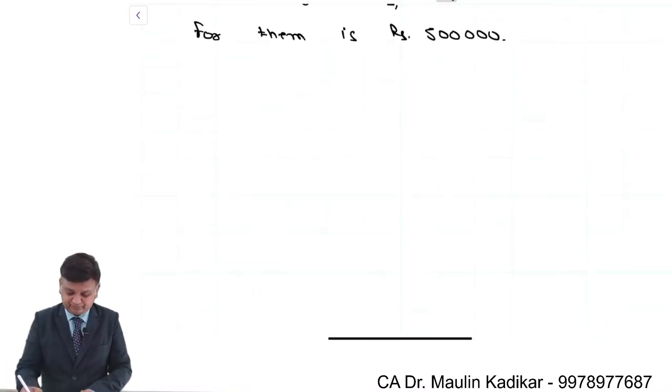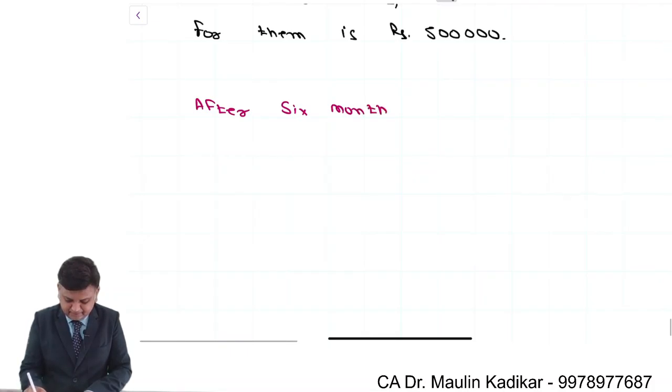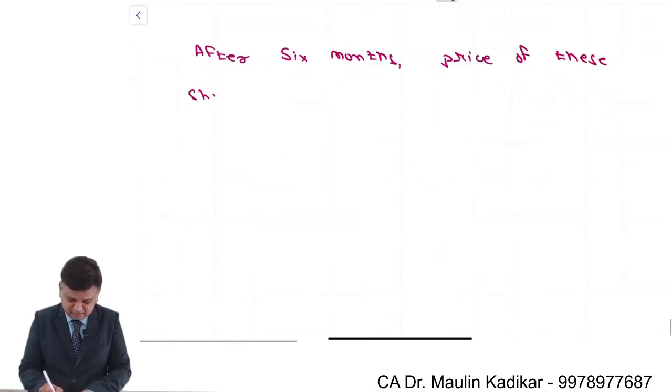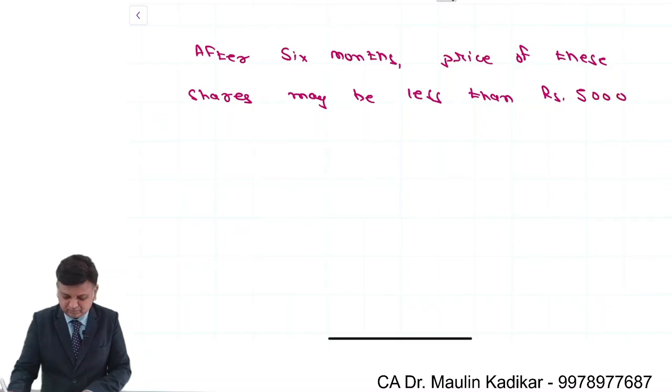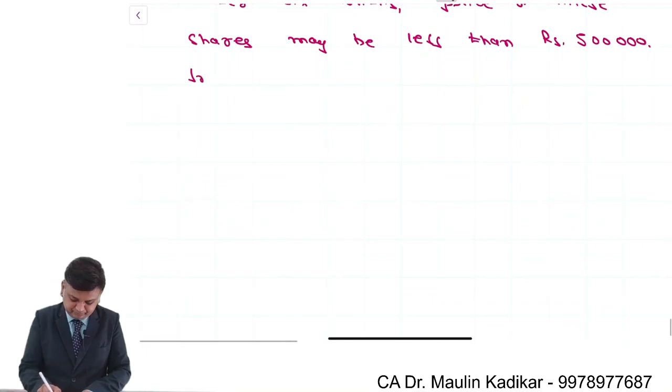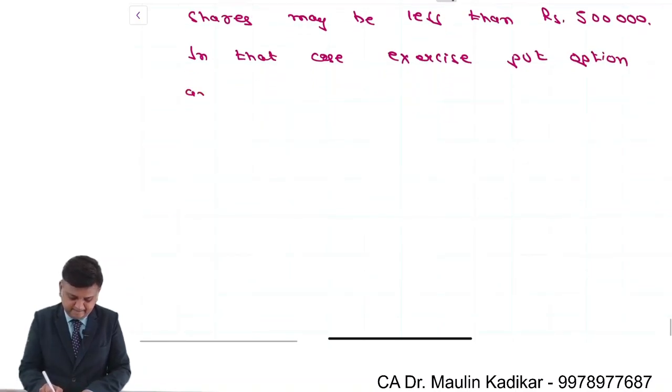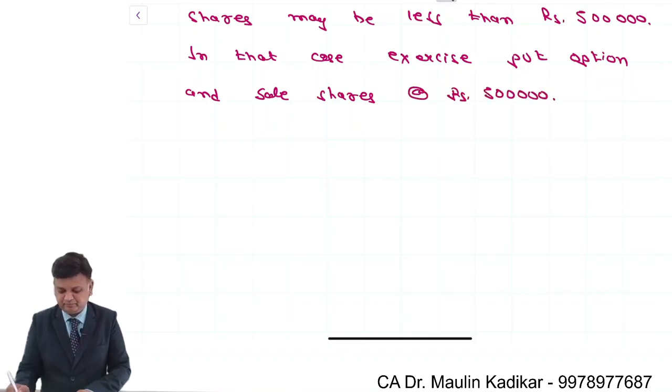After six months, price of these shares may be less than rupees 5 lakhs. In that case, exercise put option and sale shares at the rate of rupees 5 lakhs.